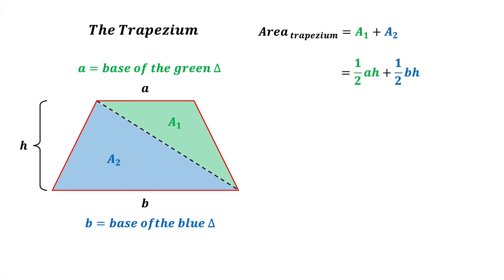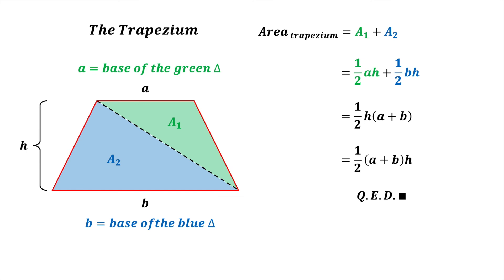We now have the expression for the trapezium in terms of a, b and h. We're now going to simplify this expression by factorising, done by factoring out the common half h from both terms. Doing this gives us half h times (a plus b). We can re-express this as half (a plus b) times h, which is the usual way of writing it.